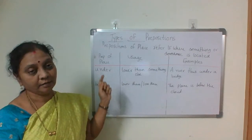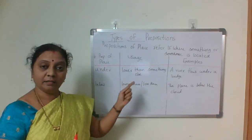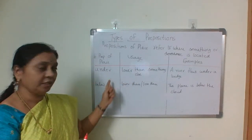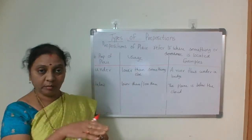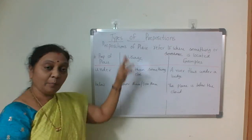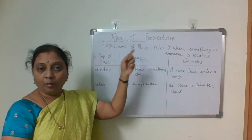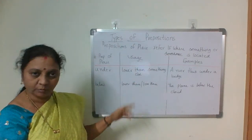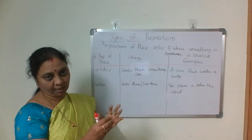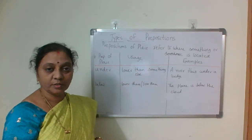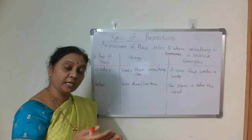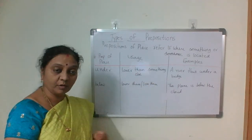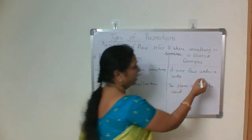The other two are 'under' and 'below'. 'Under' talks about lower than something else — lower position. Both 'under' and 'below' talk about lower position. Above is opposite to below; over is opposite to under. For example: 'A river flows under a bridge' or 'The cat is under the table' — lower than something.